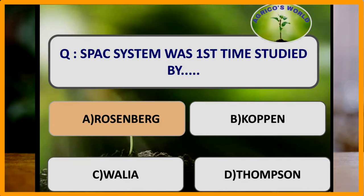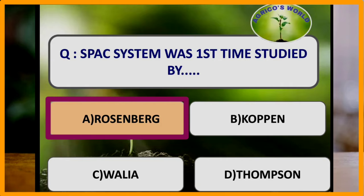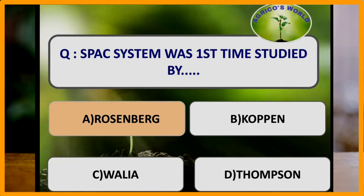Soil, plant and air continuous system was first time studied by which scientist? The soil, plant and air continuous system was first time studied by the scientist Rosenberg.